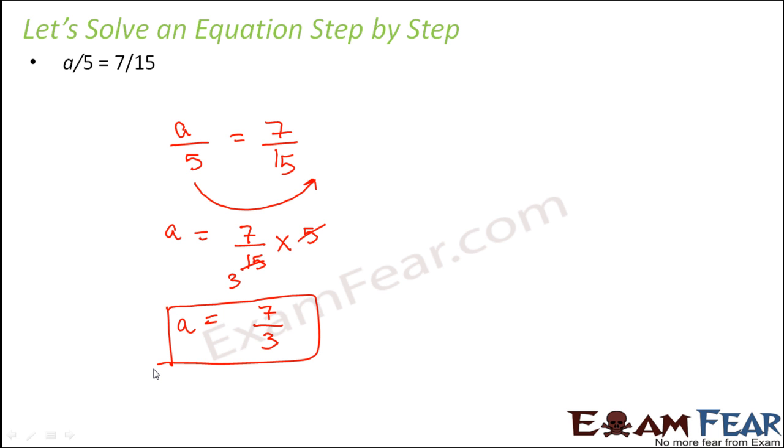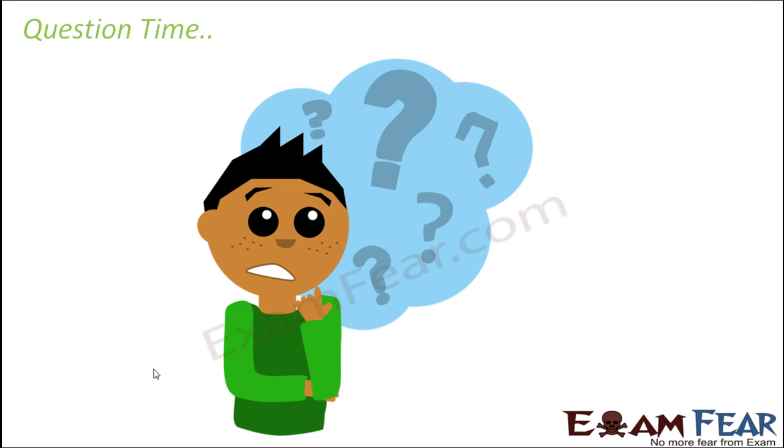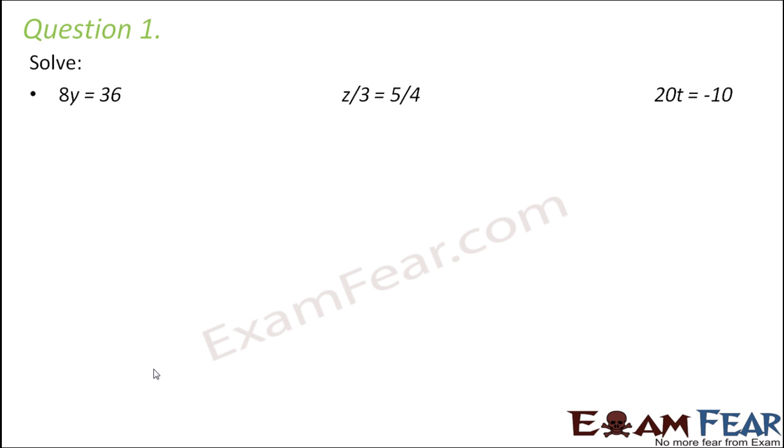Based on whatever we have learned so far on solving equations, let us try to solve a few questions. Question number 1: Solve 8y equals 36. In this case also we keep the variable on this side and we move the constant on the other side. Here it is 8 multiplied by y, so this side it will become divided by 8. So this becomes 36 by 8. So you get y equals 9 by 2. This would be the solution.